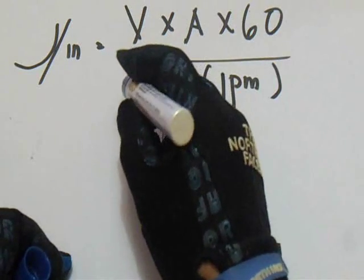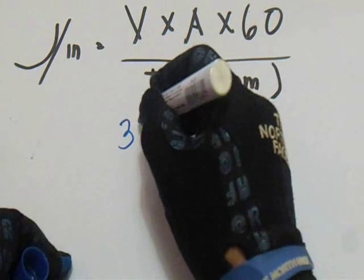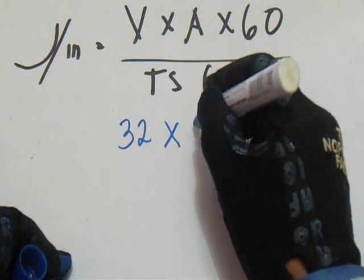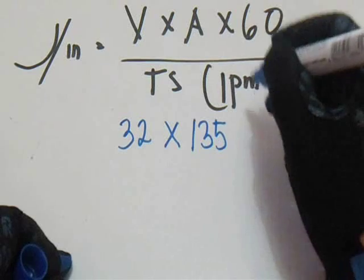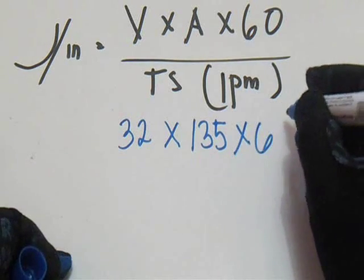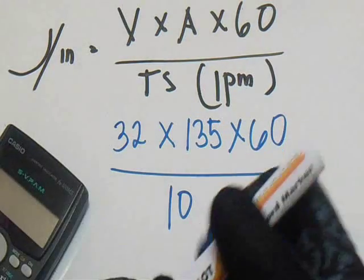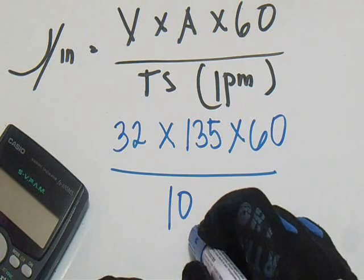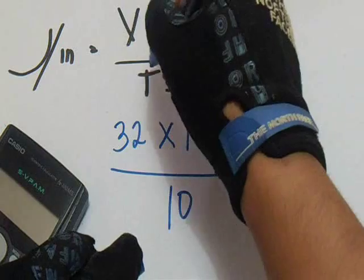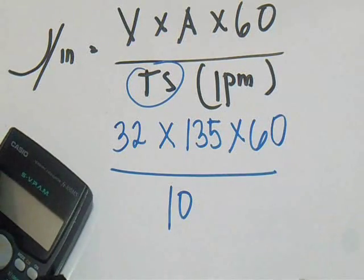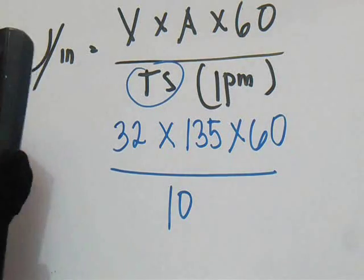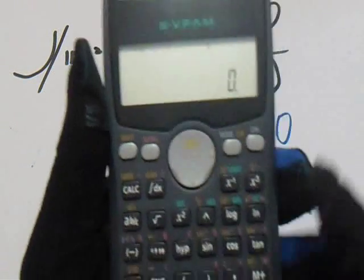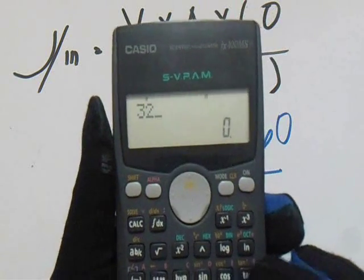For this formula, first, long arc length. Let's say our Volts is 32, multiply it by Ampere 135, times 60, over our IPM which is 10 — that is inch per minute, the travel speed TS.